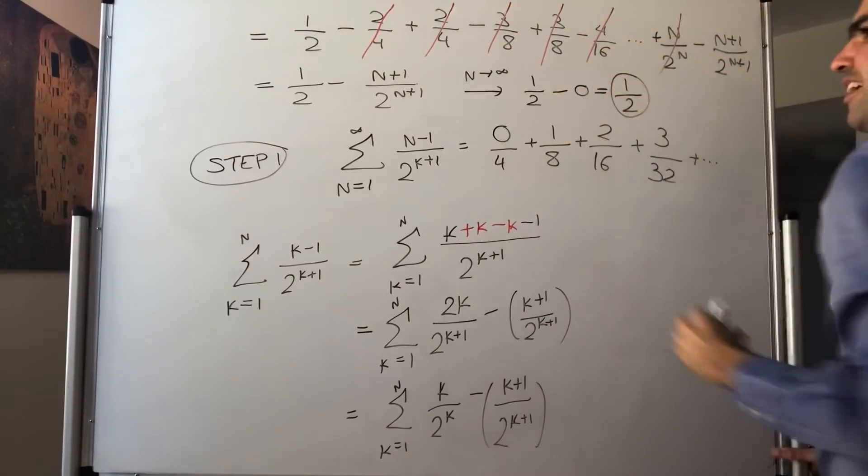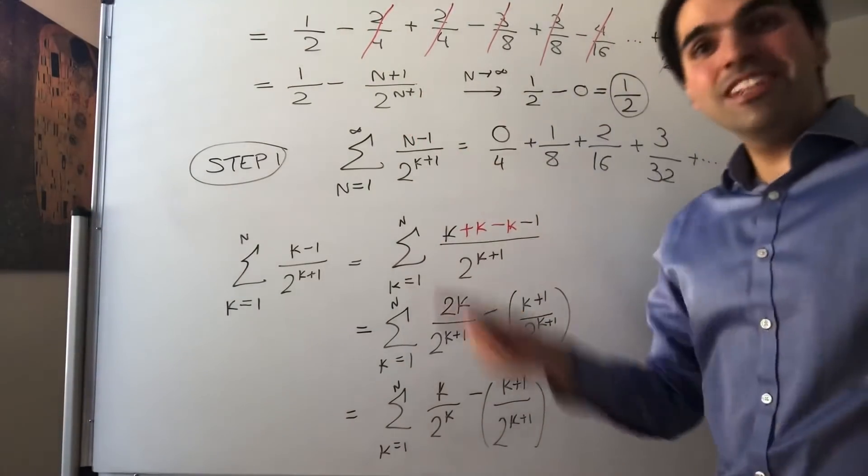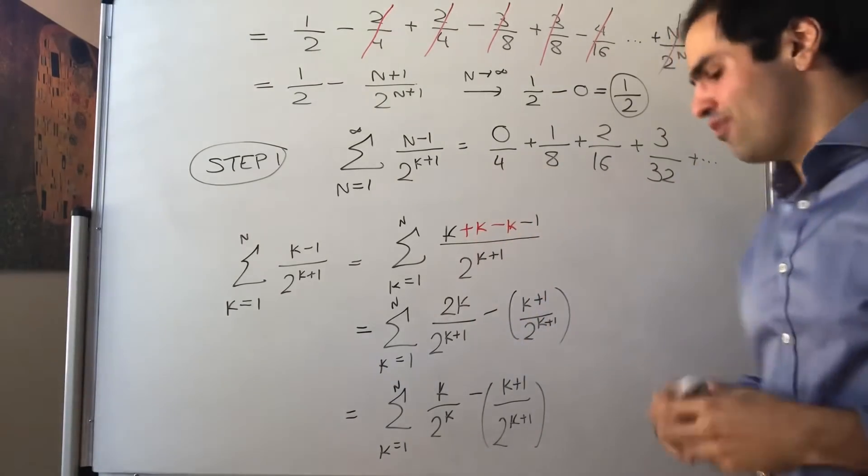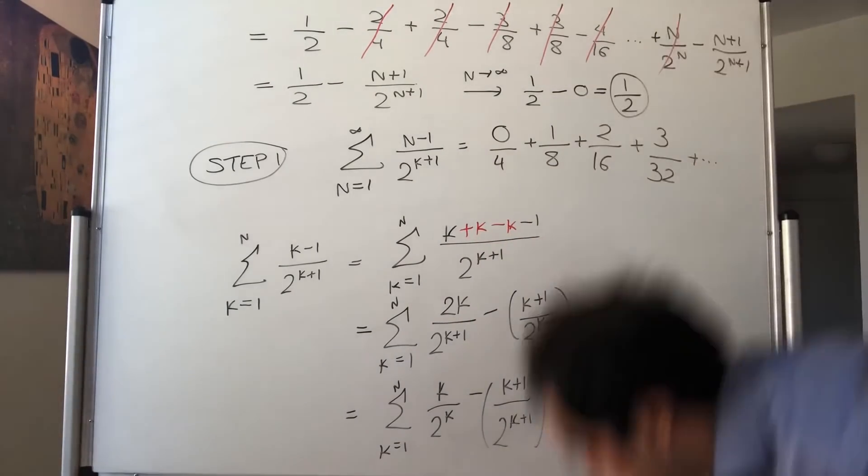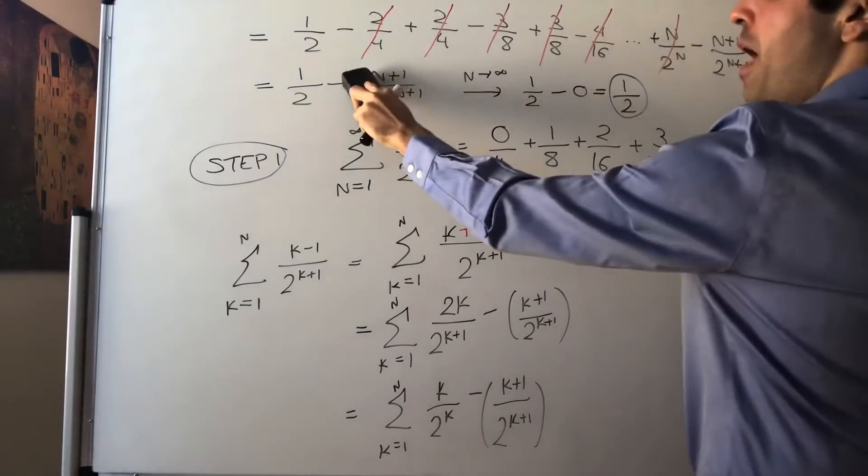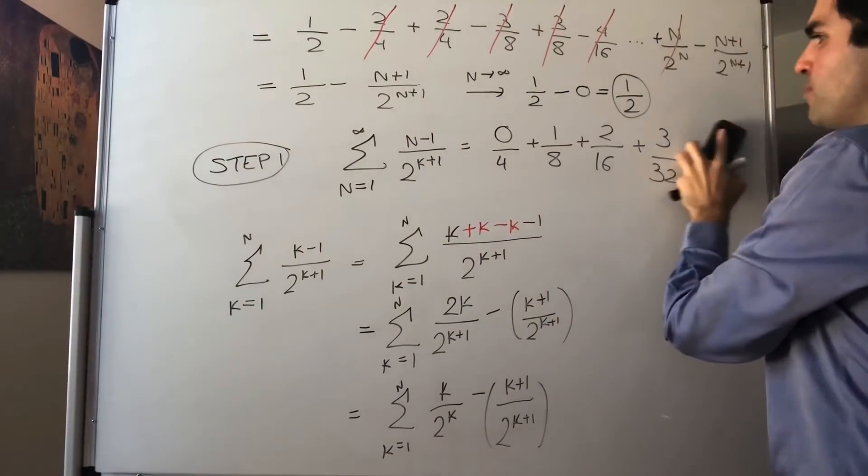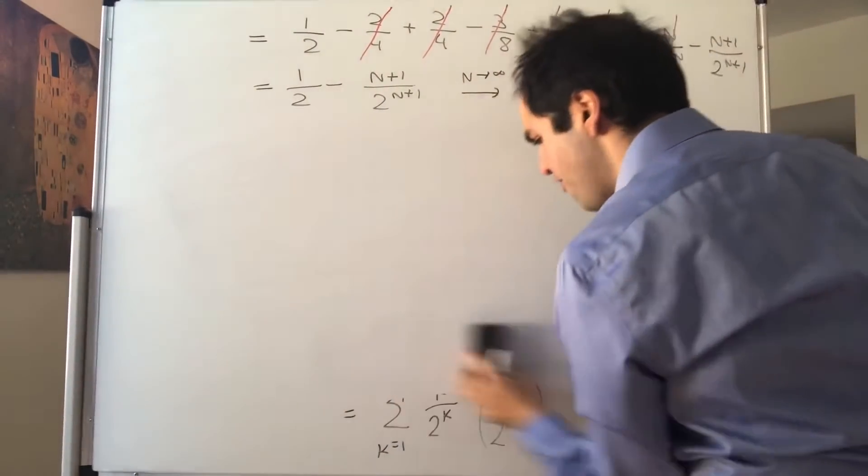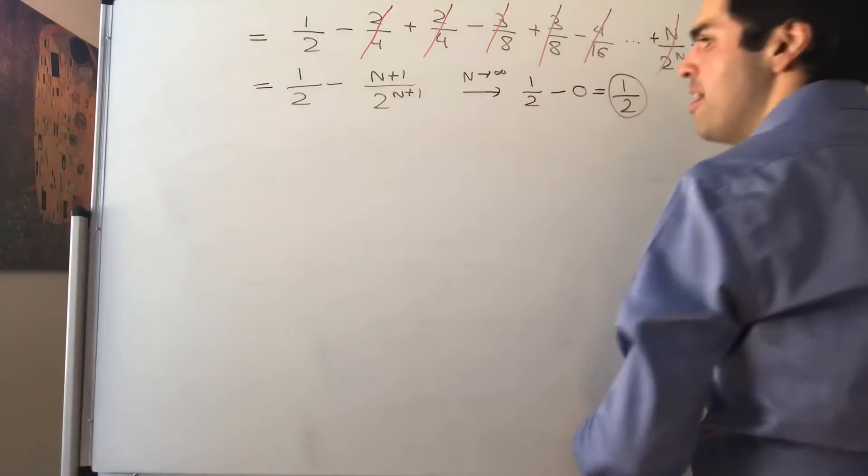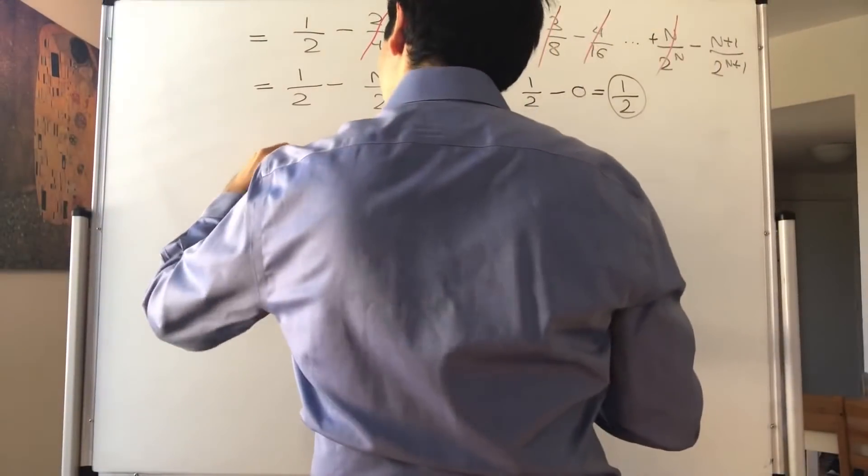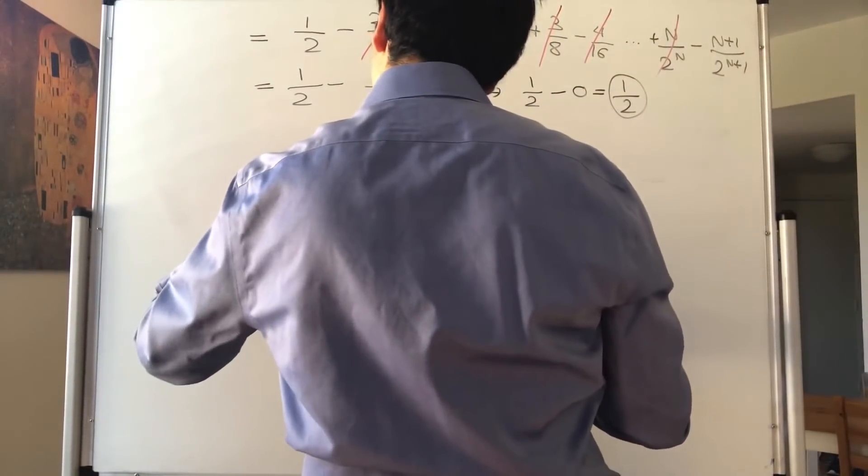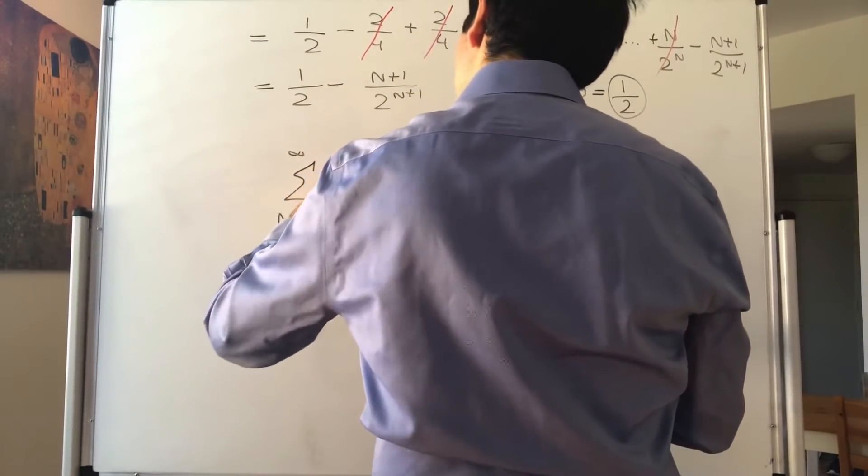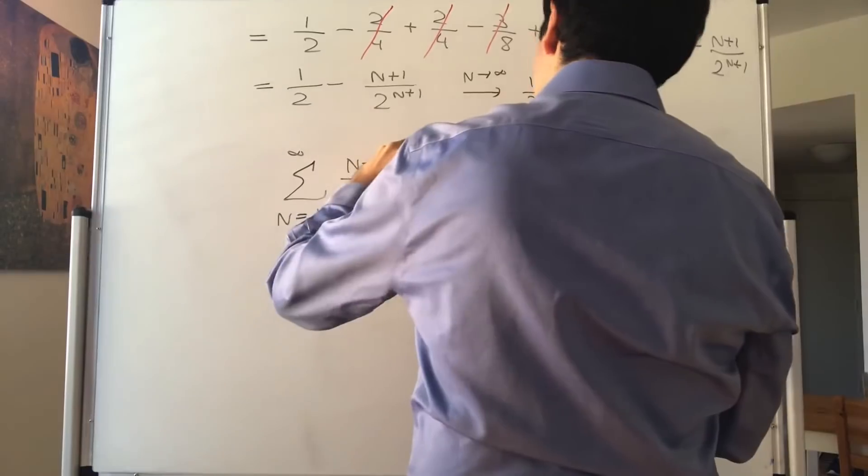And in the end, we get 1 half. And I know I'm being very hand-wavy, but I have done a video on this before, where I showed that, for instance, any power of n divided by any exponential function goes to zero. And therefore, what have we found? We've rigorously found that the sum from n from 1 to infinity of n minus 1 over 2 to the n plus 1 is 1 half.